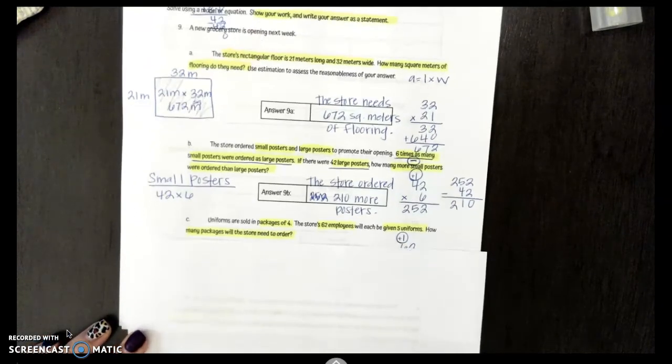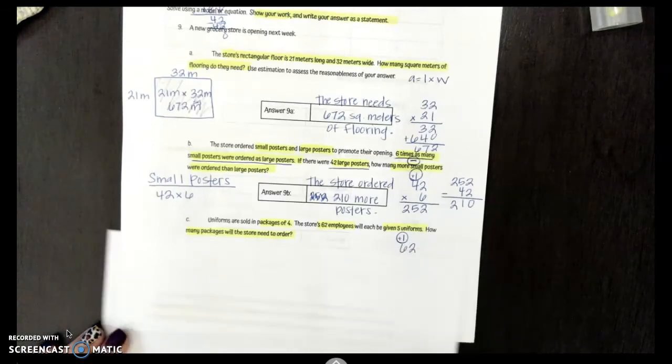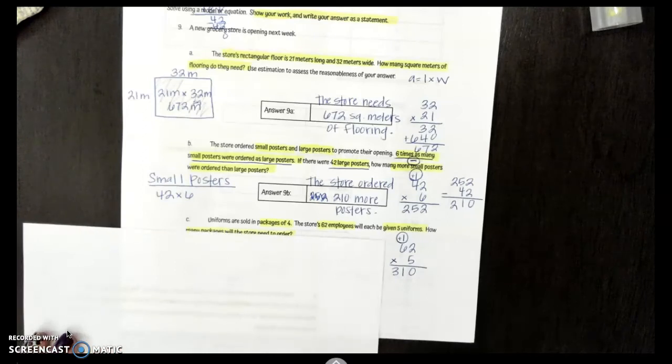Awesome. Let's look at letter C. Uniforms are sold in packages of 4. The store's 62 employees will each be given 5 uniforms. How many packages will the store need to order? So I'm thinking, okay, 62 employees. Employee number 1 needs 5 uniforms. Employee 2 needs 5 uniforms. All the way until I get to employee 62 who also is going to need 5 uniforms. Well, how many uniforms do we need altogether? I could take 62 and I can multiply it by 5. And 62 times 5 is going to tell me how many uniforms I need to order.